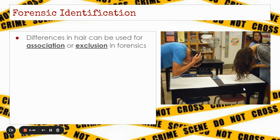Differences in hair can be used for association or exclusion in forensics. We would use the term 'microscopically similar to.' This is not individual information — we can say the hair found at the crime scene is microscopically similar to an Asian hair, or microscopically similar to a dog. We can't say definitively whether it came from a human or a dog or a cat. If it's microscopically similar to a human, that would mean it's not microscopically similar to a horse, so we could potentially exclude the possibility of it being a human. But it's not definitive evidence.